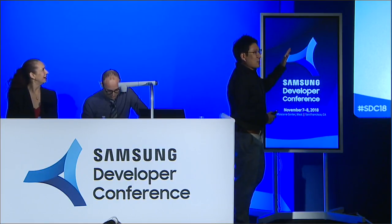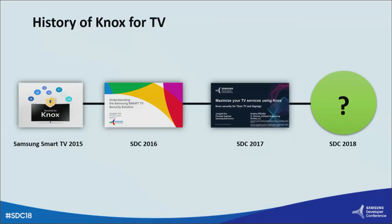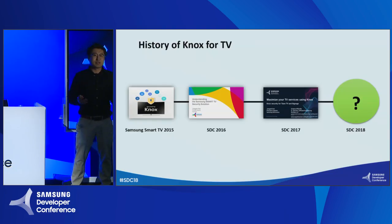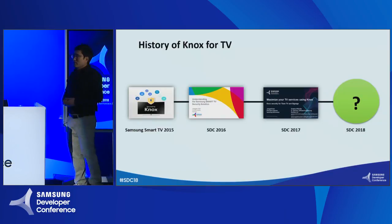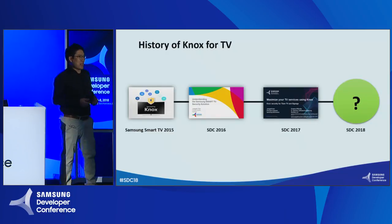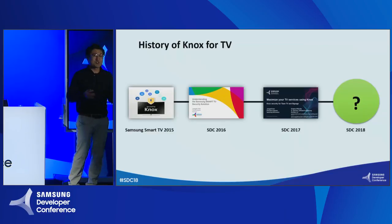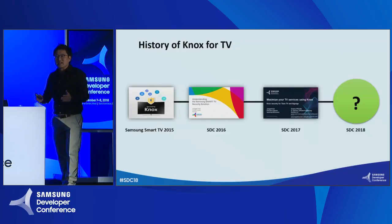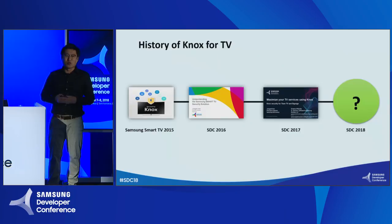I will explain in order of this agenda. First, let me briefly explain how Knox TV has evolved. Since 2015, Knox security solution was first installed on all models of smart TV and B2B displays. We opened our Knox security features at SCC 2016 to show why Samsung TV is secure and safe. Last year, we unveiled our Knox platform and Knox function features to software developers.